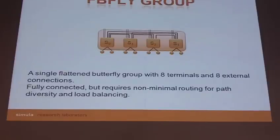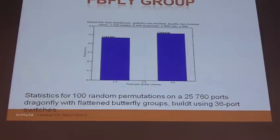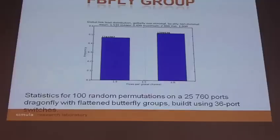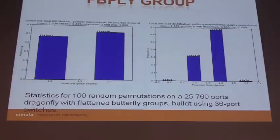For our actual study we used a much bigger flattened butterfly because we wanted to maximize what we could do with 36-port switches, which are the common switches available today. If we look at the global blocking — that is the load on the links between the different groups — it is on average 1.5 and worst-case 2. This is independent of the group topology, because as long as we keep the same size and use the same number of ports per switch, we end up with this number. Looking at the local load distribution within a single group using the flattened butterfly, the average blocking is 1.69 and the maximum observed is 3.